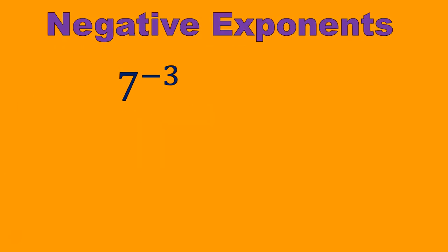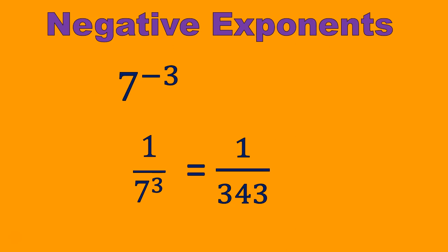Now we're going to switch gears and talk about negative exponents. Negative exponents take that number and everything raised to that power and switch it — whether it's in the denominator or numerator. If it's in the numerator, we move it down to the denominator and the exponent becomes positive. If it was in the denominator as a negative exponent, it would get moved to the numerator. The base and the exponent move together, with a 1 as a place filler. Now we just do 7 to the power of 3, which is 7 times 7 times 7, and that gives you 343.